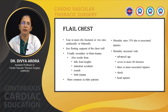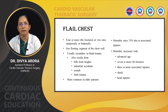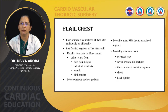Flail chest is defined when 4 or more ribs are fractured at 2 sites, unilaterally or bilaterally. There is a free-floating segment of rib and it is usually secondary to blunt trauma, but may also result from falls from heights, industrial accidents, assault, or birth trauma, commonly in older patients. Mortality rate due to flail chest can be up to 33% and increases with advanced age, if 7 or more ribs are fractured, associated with 3 or more injuries, shock, and head injuries.